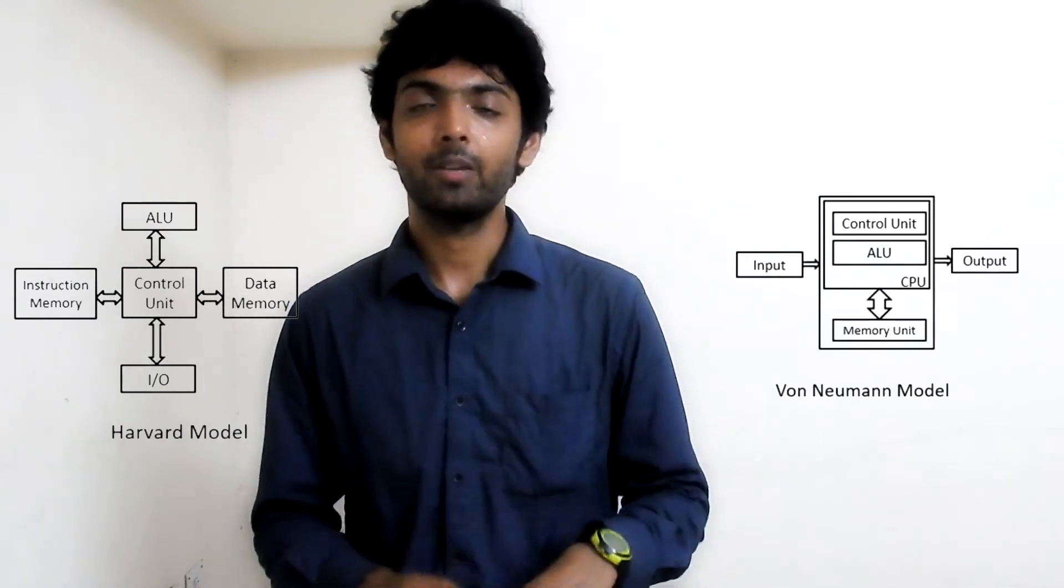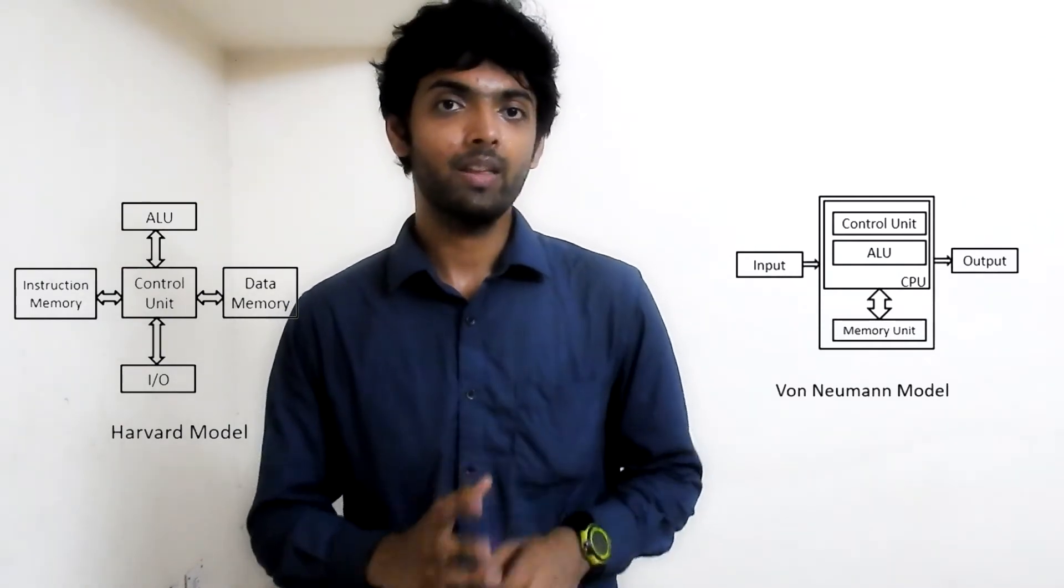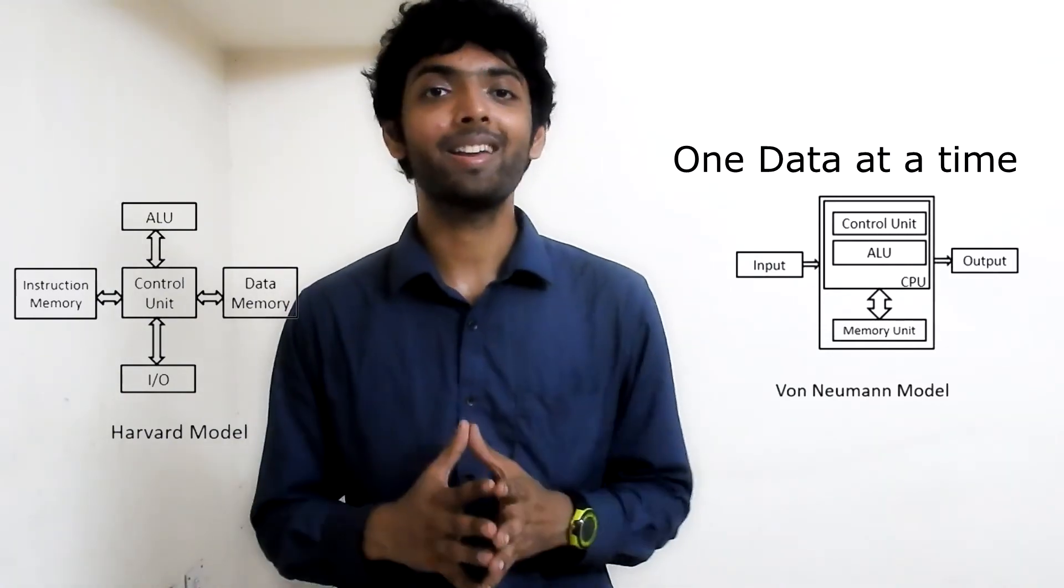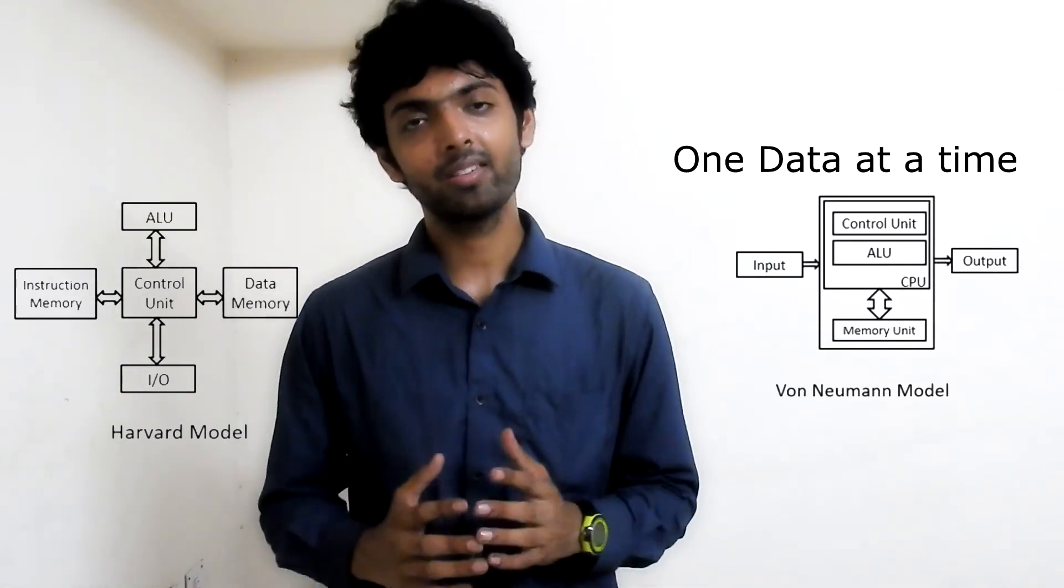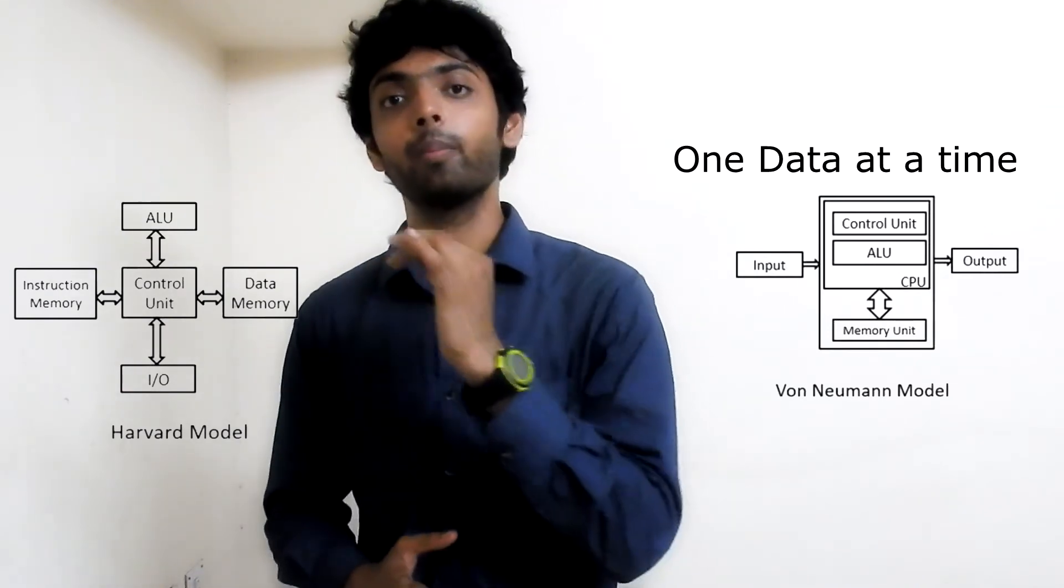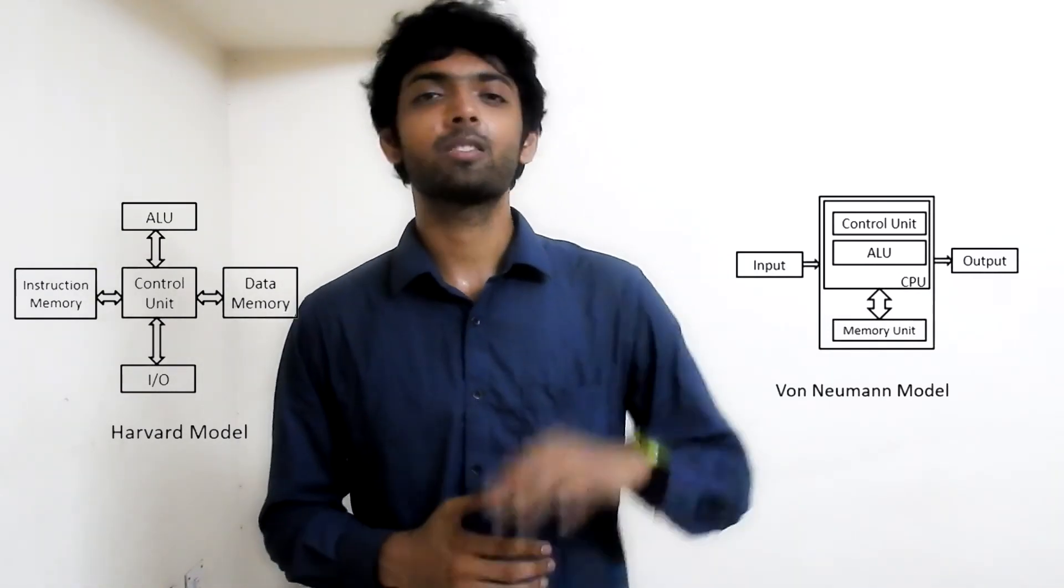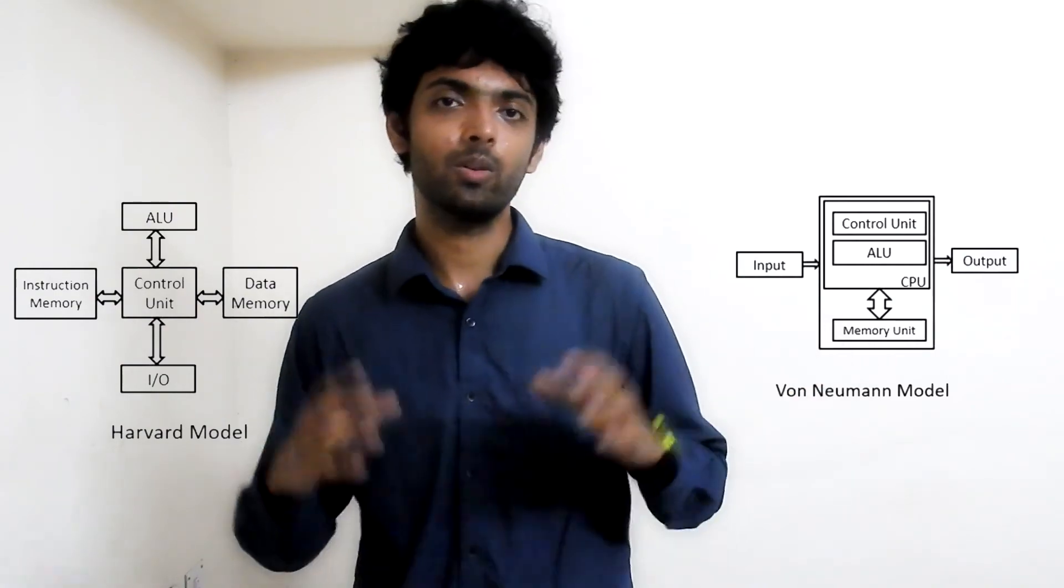In Von Neumann architecture, it fetches the data twice: once it fetches the program, and the second time it fetches the data supporting the program. But in Harvard architecture, it continuously takes the data from the program and the data supporting the program.